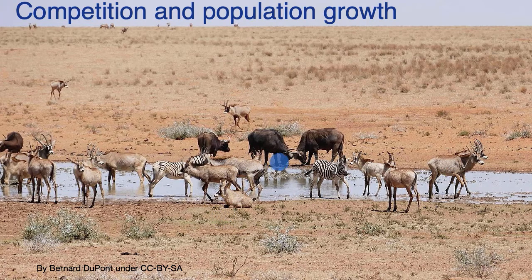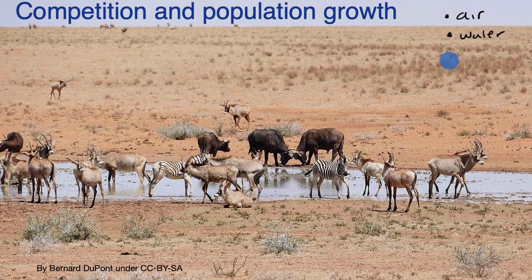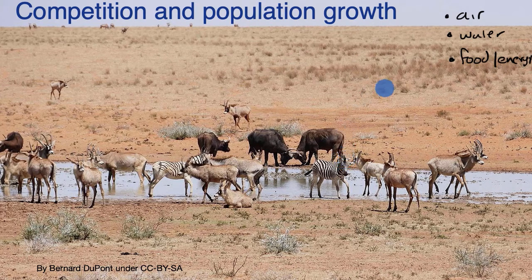Let's think about what any organism, population, or community of populations needs to survive. Most animals that live on the surface, like these animals, need air — especially oxygen. Plants need carbon dioxide from the air. They need water. They need a source of energy, which I'll call food, or energy, because it's not always in the form of food as we might recognize it. And basically, they need space in which to exist.